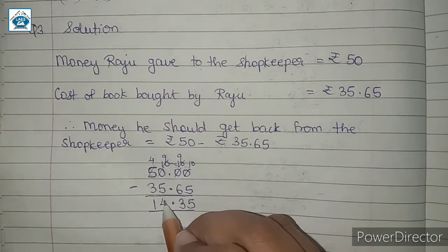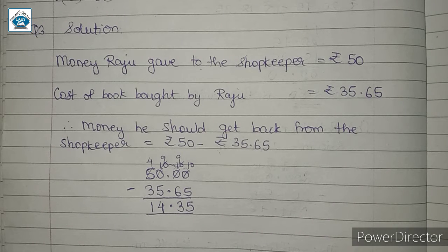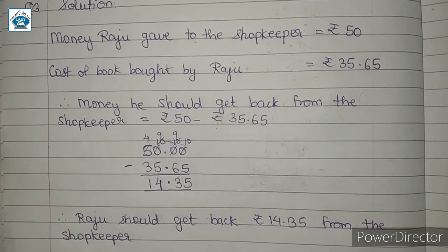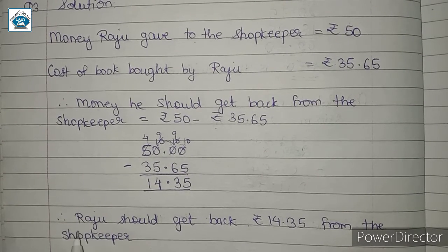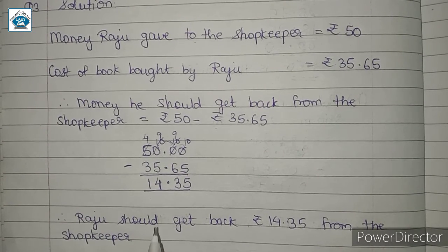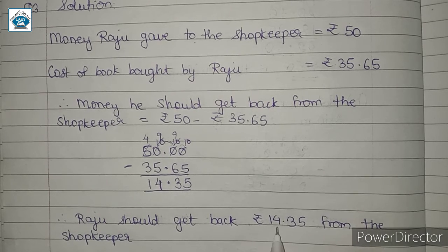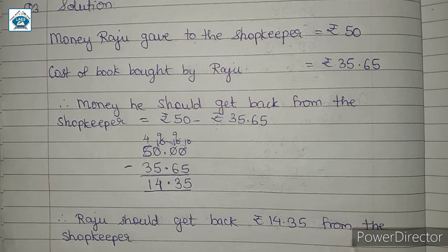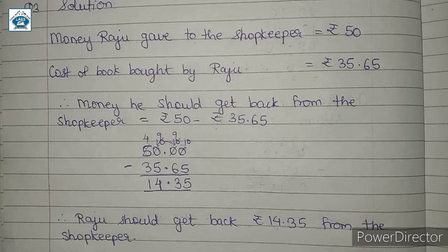Therefore, money Raju should get back is Rs. 14.35. In this way, we can write the concluding statement: Therefore, Raju should get back Rs. 14.35 from the shopkeeper.